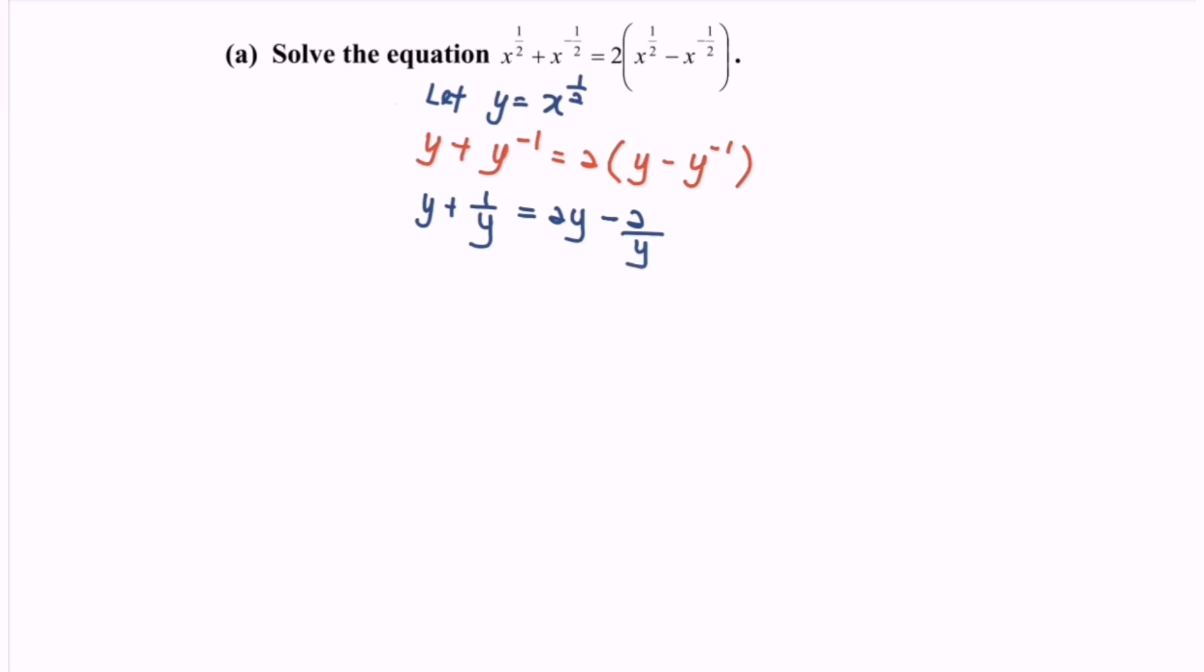Multiply all the elements with y and we will have y squared plus 1 equals to 2y squared minus 2. Rearrange the situation and we will have 2y squared minus y squared minus 2 minus 1 equals to 0. y squared minus 3 equals to 0.